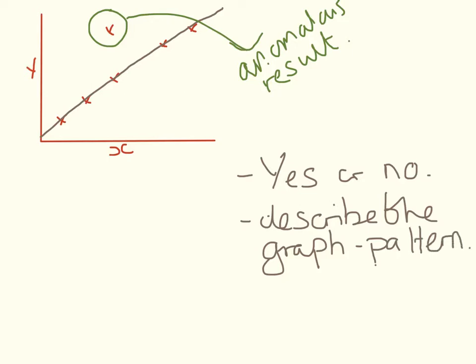Can you see a pattern? And if you can see a pattern, the pattern is a nice straight line. How do you know that this is the anomalous result? You know that this is the anomalous result because it is nowhere near the line. You need to tell me that.